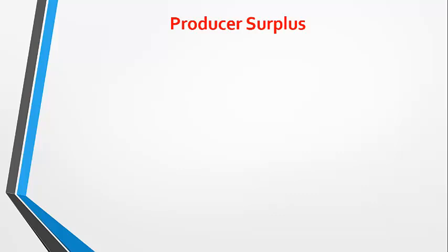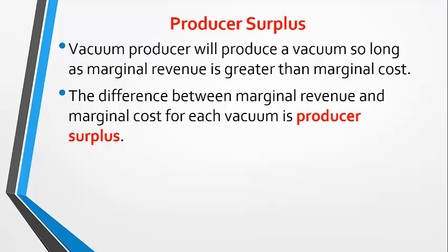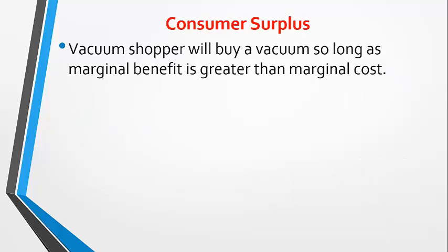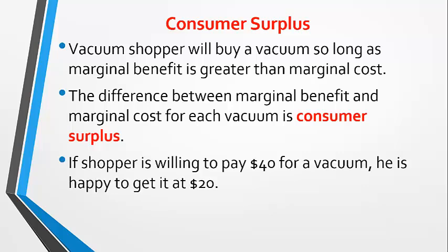Let's look at producer surplus as it relates to supply and demand, using the example of a vacuum manufacturer. A vacuum producer will produce a vacuum so long as he can sell it for more than the cost to make it. The difference between the marginal cost of producing it and the marginal revenue from selling it is his producer surplus. So if a vacuum costs $20 to make, the producer will be happy to sell it for $40 — he'd get $20 producer surplus. Consumers likewise will purchase the vacuum so long as the marginal benefit is greater than the marginal cost, which is the price they pay, providing they have the money. So if a shopper is willing to pay $40 and can get the vacuum at $20, that bargain is his consumer surplus.